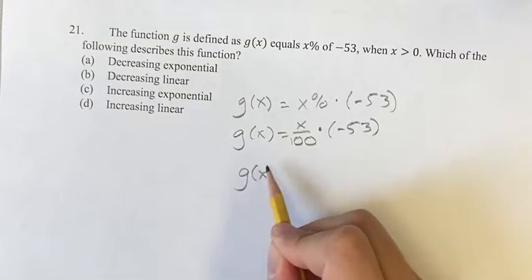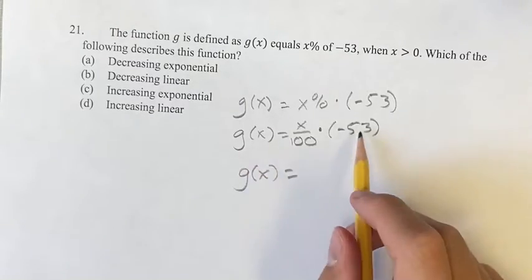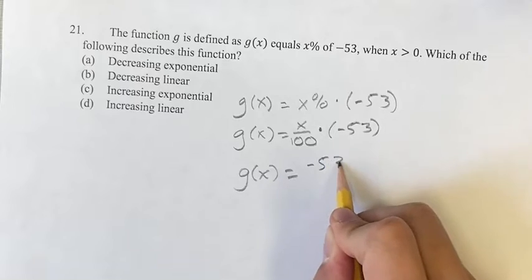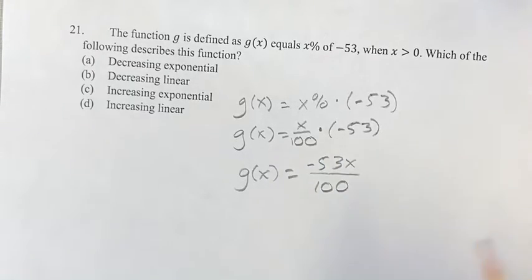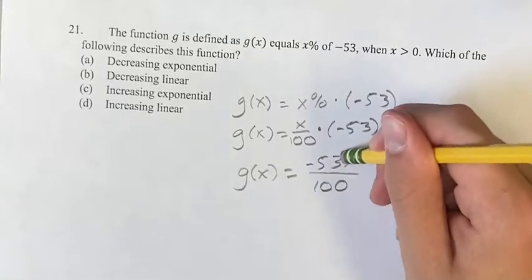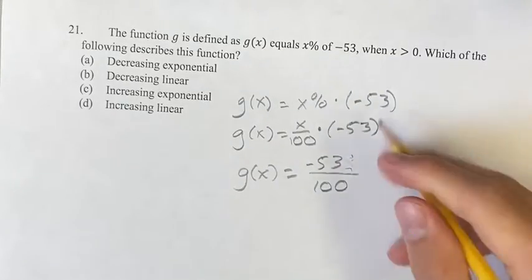So our final equation here is g of x, if we're multiplying these two together, is negative 53x over 100. And if it makes it a little bit more clear we can put the x out in front of it.